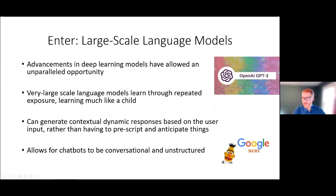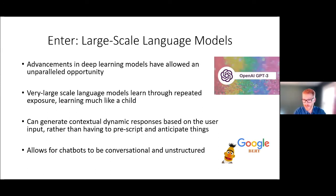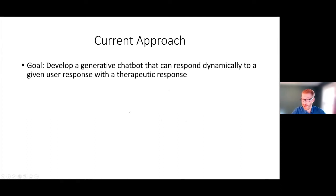There have been major advances in the ability to produce contextual information within the past two years with large language models. These are all based on deep learning — they learn by repeated exposure to concepts, much like a child would, learning by example. They can generate contextualized, dynamic responses based on user input, which actually allows for conversation rather than predefined options.